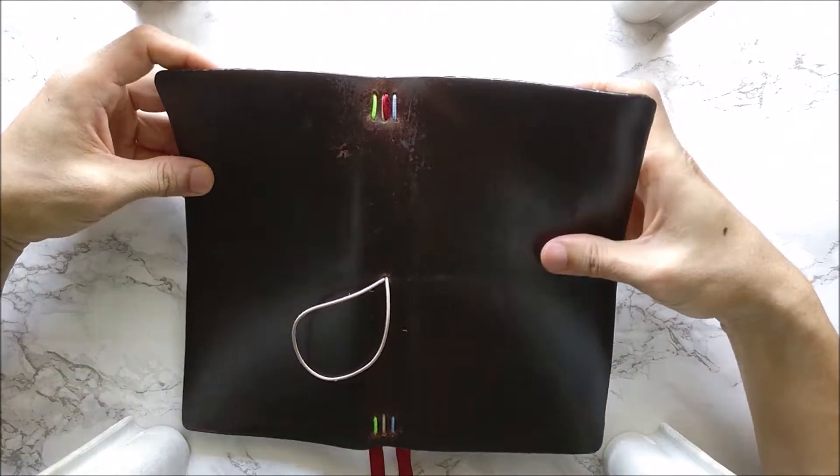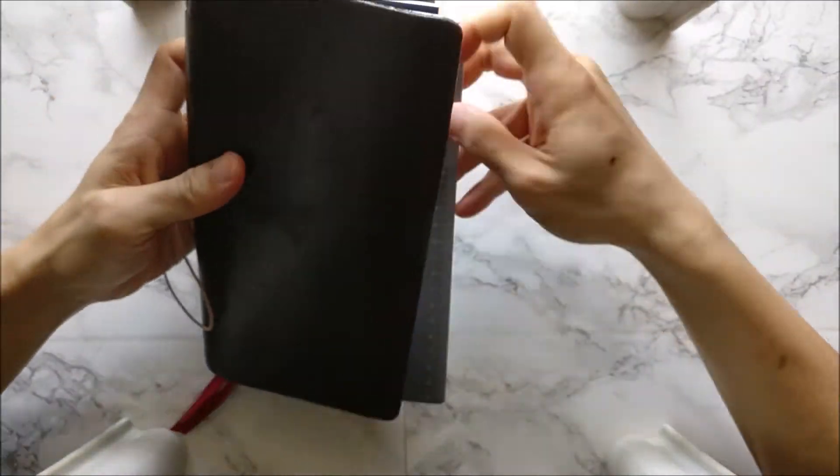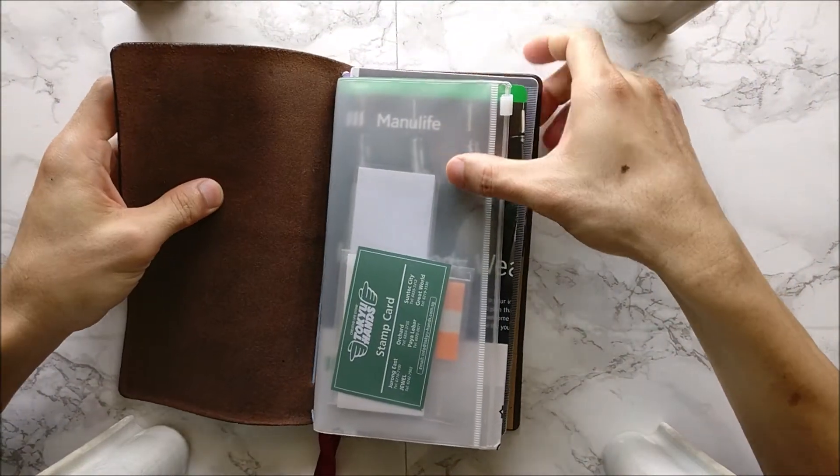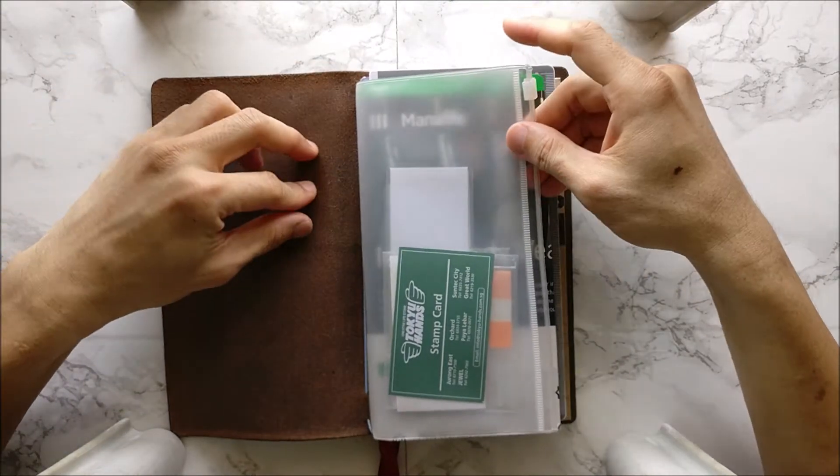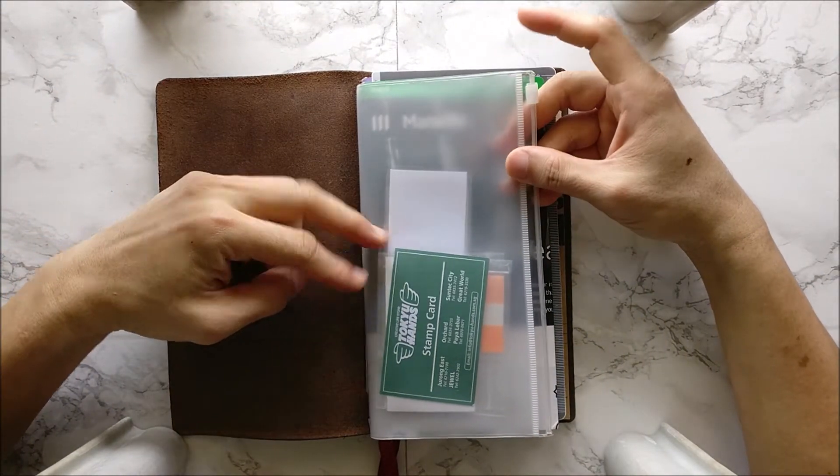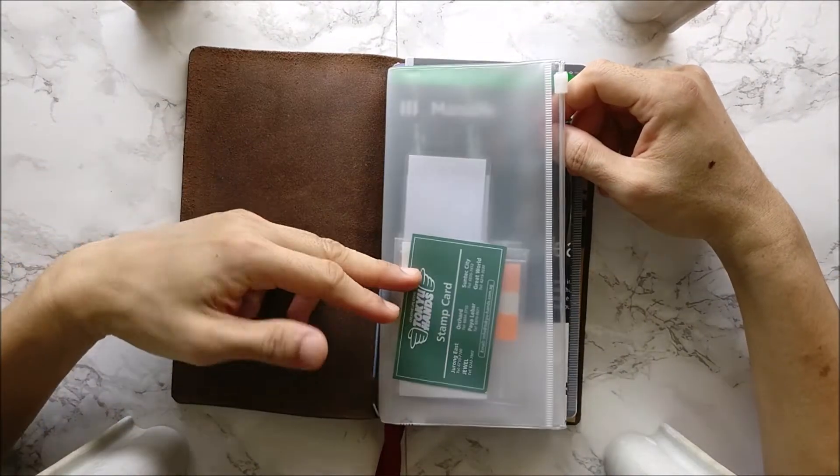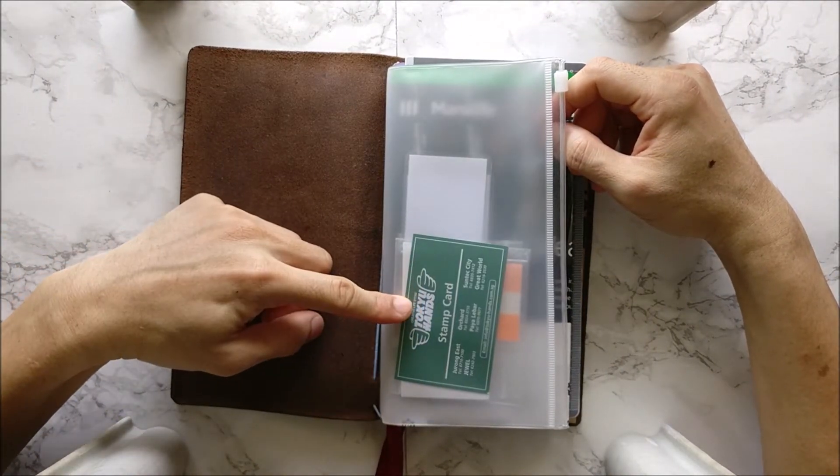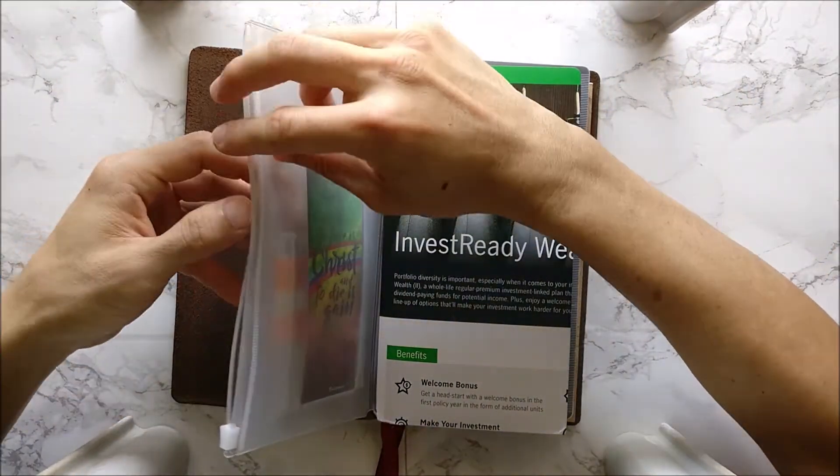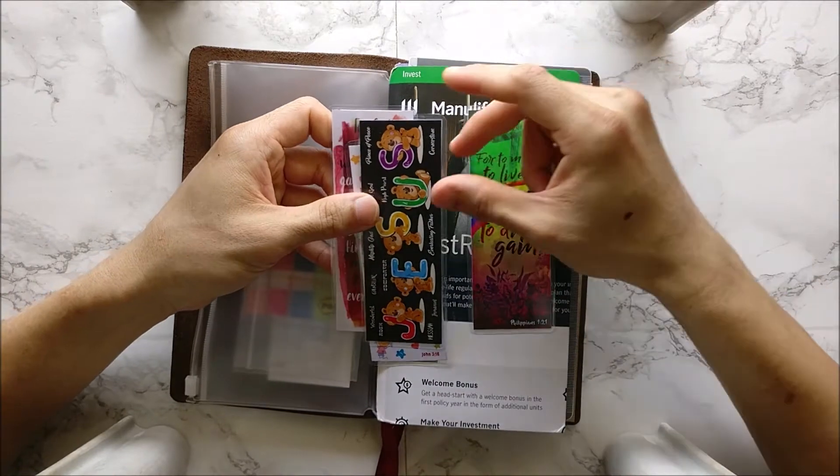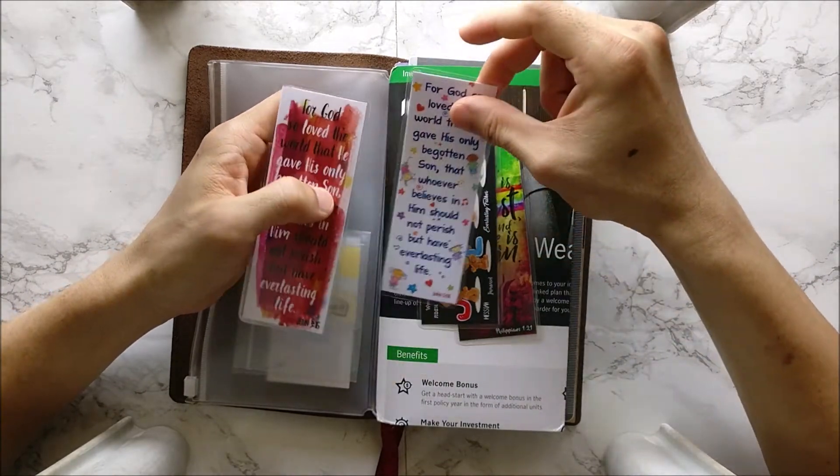Alright, so this is how I set it up. Oops, this just came out. So, what I have here, okay. So for the first one, I have this zip pocket folder. I got this in Aliexpress. So what I have here is some stamp card from Tokyo Hands.